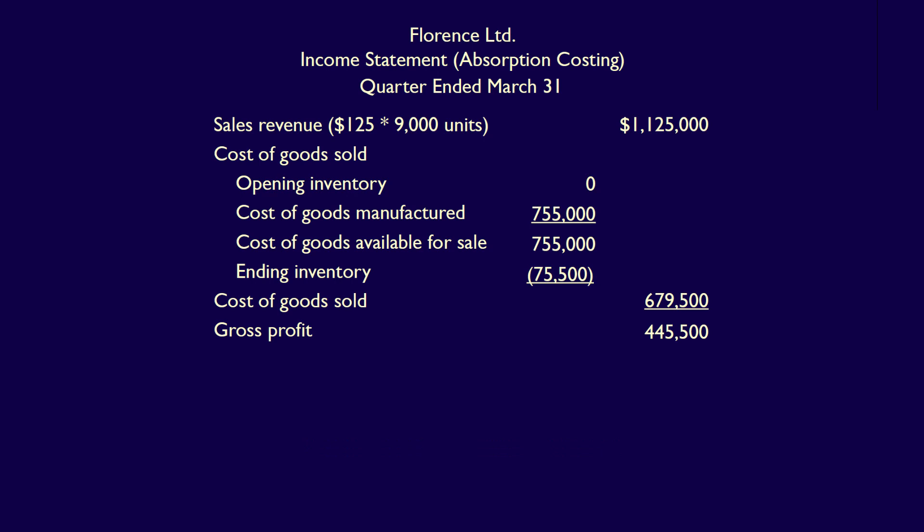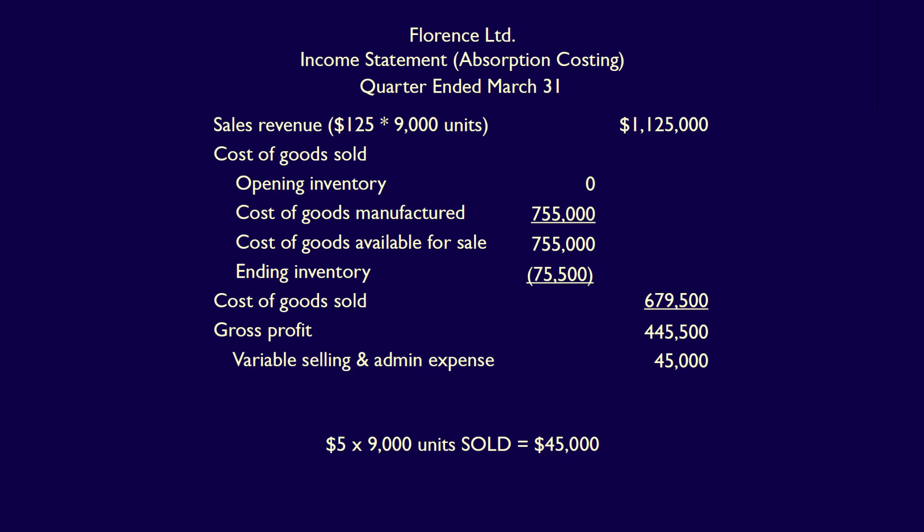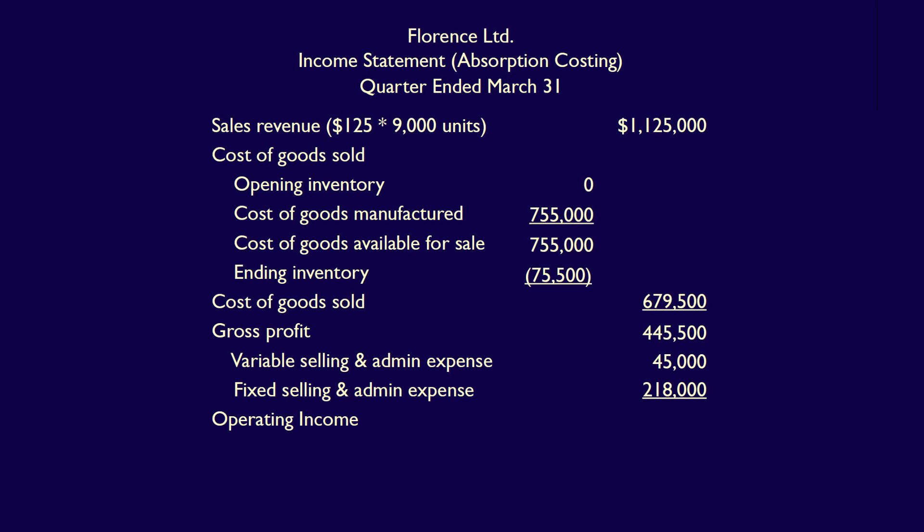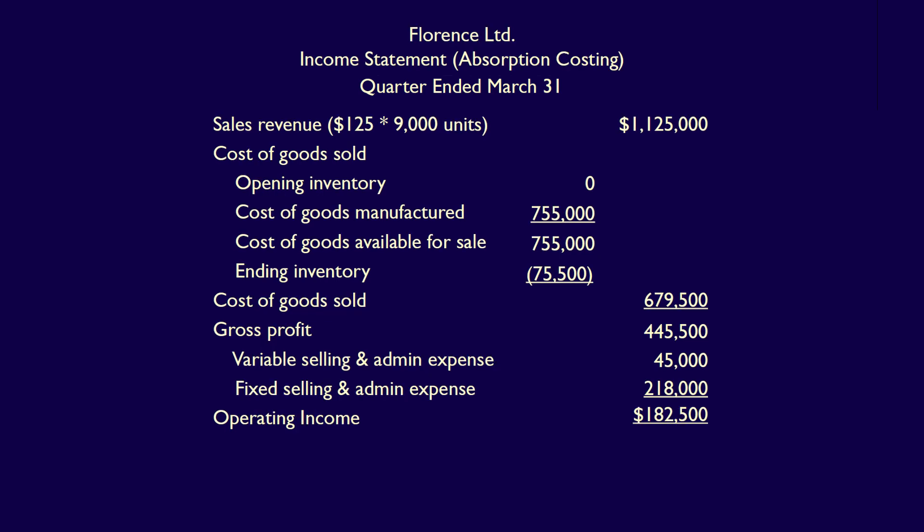Sales revenue of $1,125,000 minus cost of goods sold of $679,500 equals the gross profit — also called gross margin — of $445,500. We then deduct the period costs. First is variable selling and administrative expense: 9,000 units sold multiplied by $5 per unit equals $45,000. Note we use units sold, as we only incur this expense when we sell units, not when we produce them. Next is fixed selling and admin expense of $218,000. Operating income equals $445,500 minus $45,000 minus $218,000, which equals $182,500.